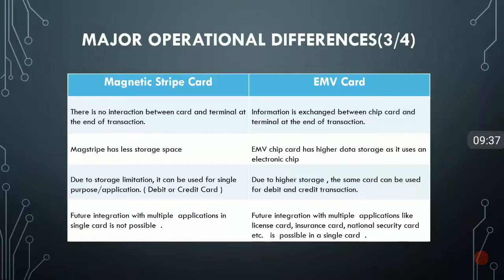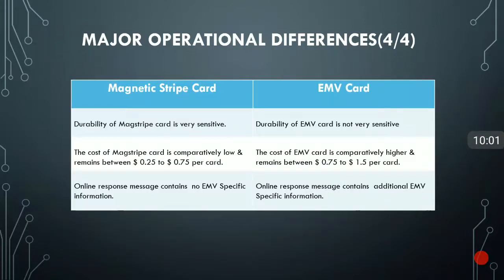Another drawback of the magnetic stripe card is that it can store only a single application, so future enhancement or integration with other applications is not possible. With EMV this is very much possible. Other differences: the durability of the magnetic stripe card is very sensitive, while EMV has no such issues. The cost of the magnetic stripe card is on the lower side compared to EMV. Finally, the online response message for magnetic stripe contains no specific EMV-based information, but the same is not true for an EMV card.